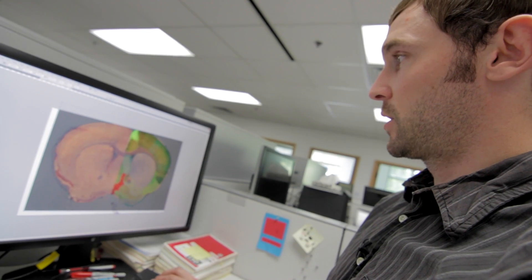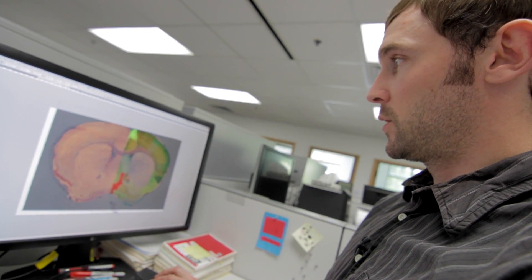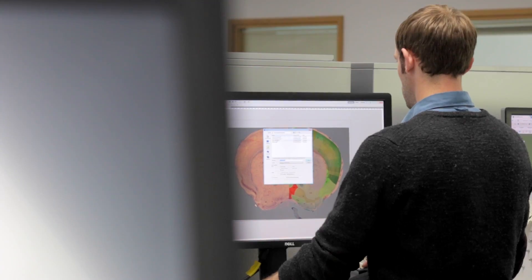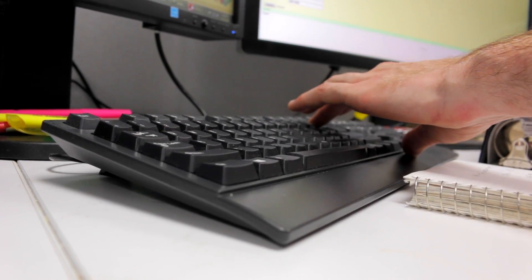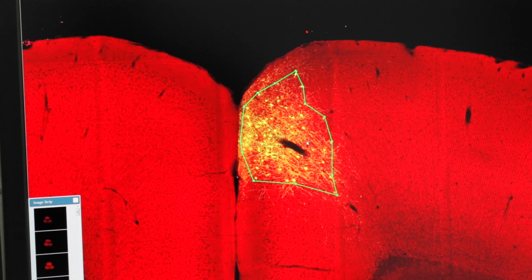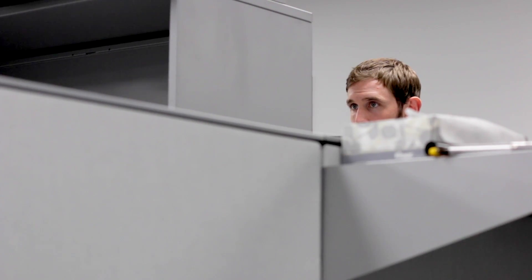Once I get a good match, I can see that this injection has occurred over the dorsal anterior cingulate and the secondary motor cortex. Input the injection structures. My next step is to draw polygons over the injection site. And this allows the segmentation algorithm to differentiate between injection site signal and projection signal.